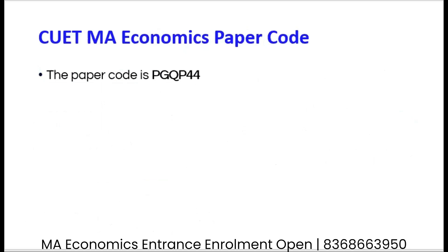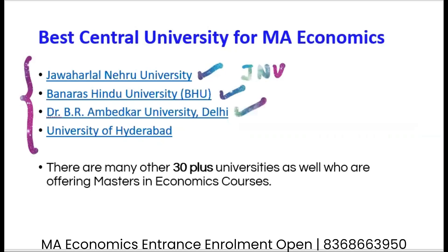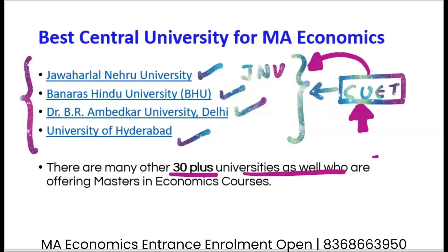For MA Economics, the paper code is PGQP44. Among the universities which have come under CUET, we have Jawaharlal Nehru University (JNU), Banaras Hindu University (BHU), Ambedkar University, and Hyderabad University. You can apply for the MA Economics entrance exam through CUET and sit for all these universities at once. There are more than 30 plus universities offering this, but these are among the top choices.